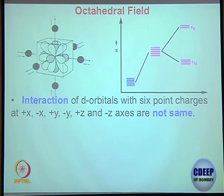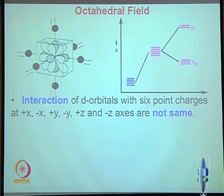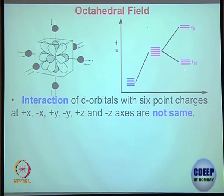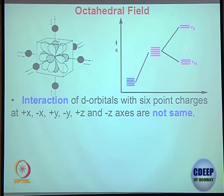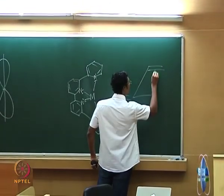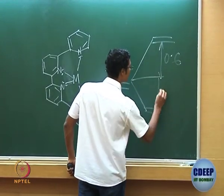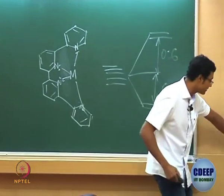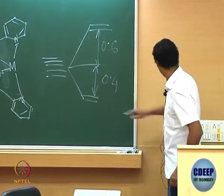The barycenter is the zero reference point. With respect to that, the destabilization of Eg will be equal to the stabilization of T2g in total. It seems asymmetric because there are 3 T2g orbitals (holding up to 6 electrons) versus 2 Eg orbitals (holding 4 electrons). So 4 times destabilization versus 6 times stabilization — the distance from the barycenter is 0.6 for Eg and 0.4 for T2g, or equivalently 6Dq and 4Dq.